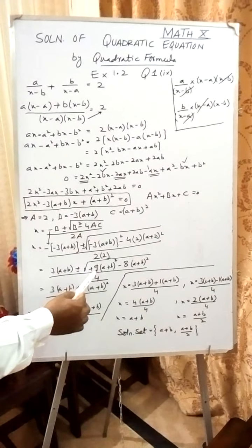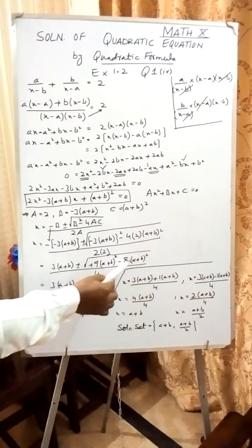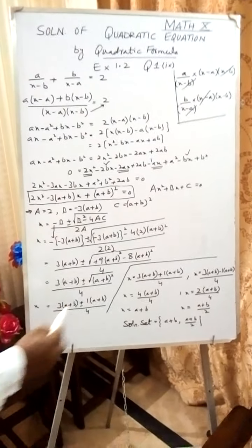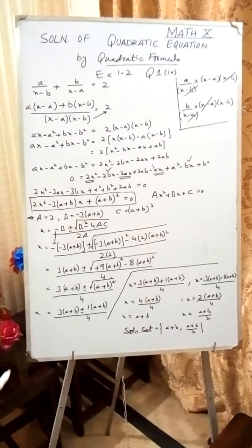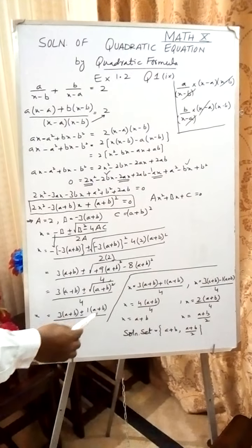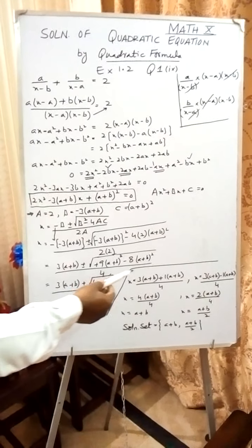This is an important step. Now 9 times (a + b)² minus 8 times (a + b)², so 9 - 8 will become 1 times (a + b)². So square and square root will be cancelled, giving us 3(a + b) ± 1(a + b) over 4.